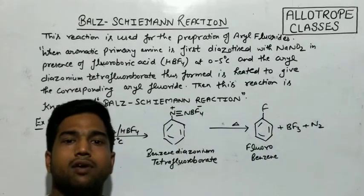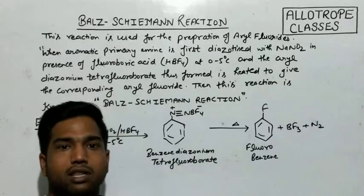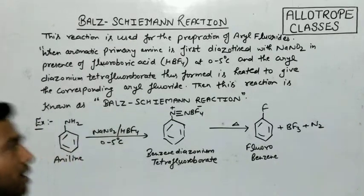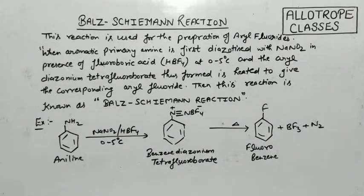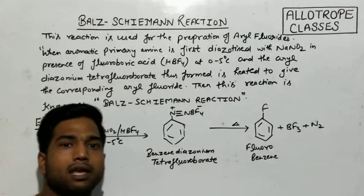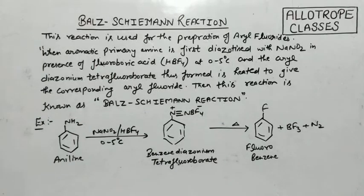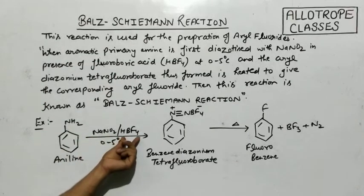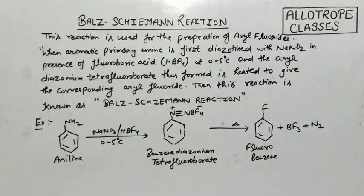We use the Balz-Schiemann reaction when an aromatic primary amine is first diazotized with NaNO2 in the presence of fluoroboric acid (HBF4). What happens is that we take an aromatic primary amine and carry out its diazotization in the presence of sodium nitrite and fluoroboric acid, i.e., HBF4, at cold temperature.